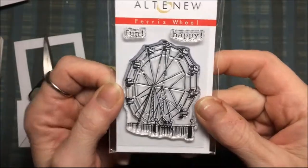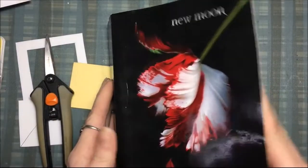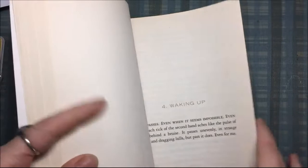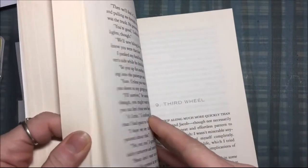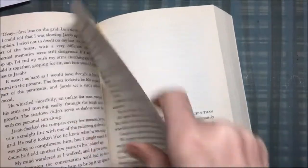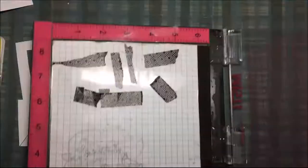I'm using the Altenew Stamp Set Ferris Wheel and I'm going to stamp that out on book paper. My go-to book is that New Moon book because it was 10 cents at Goodwill and there was like a hundred of them.